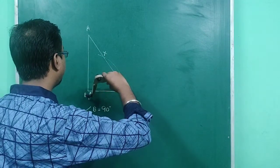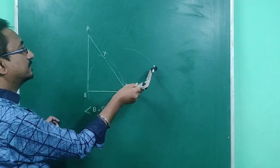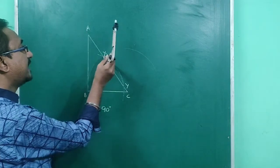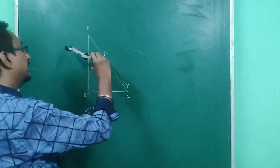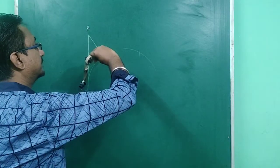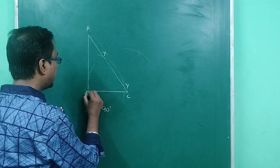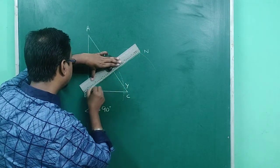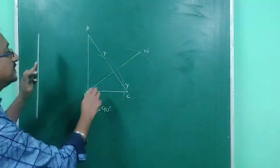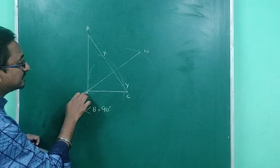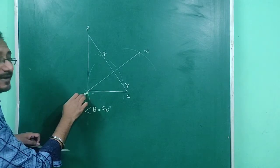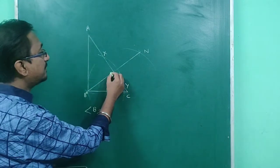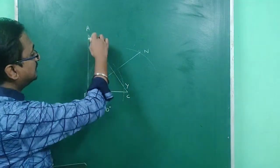The hypotenuse is intersected by the arc at two points X and Y. We will now construct a perpendicular by drawing intersecting arcs from X and Y. Taking center Y and then with the same radius taking center X, I draw two arcs that cut each other at two points M and N. Joining M and N gives the perpendicular line, which crosses at point D.